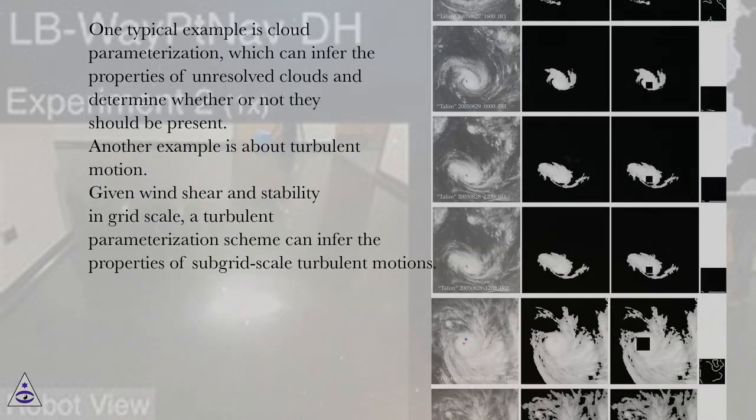One typical example is cloud parameterization, which can infer the properties of unresolved clouds and determine whether or not they should be present. Another example is about turbulent motion. Given wind shear and stability in grid scale, a turbulent parameterization scheme can infer the properties of subgrid scale turbulent motions.